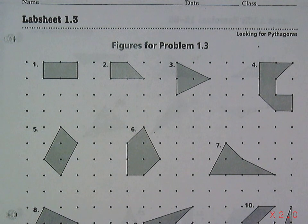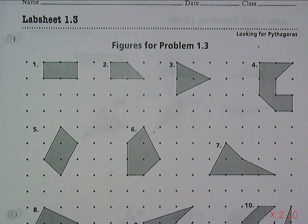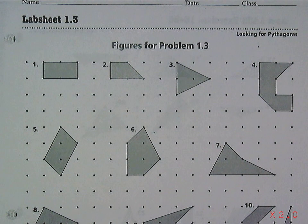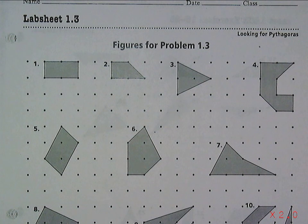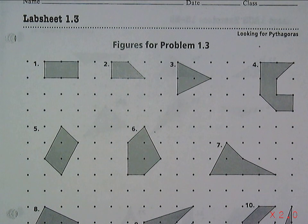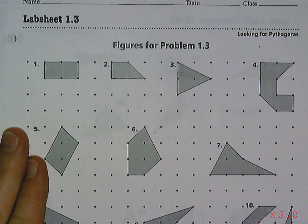In Looking for Pythagoras Investigation 1, Problem 1.3, the idea is that we want to be able to find the area of any shape. We have some different shapes in this problem, and area is the number of squares or the number of square units a shape covers.